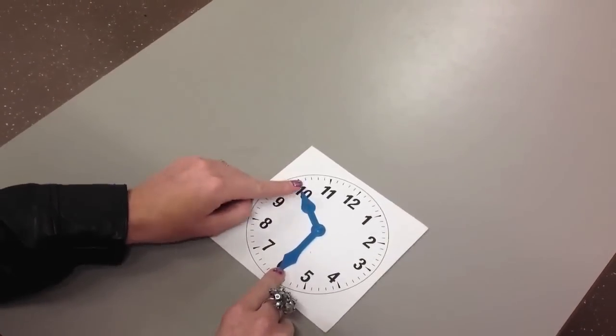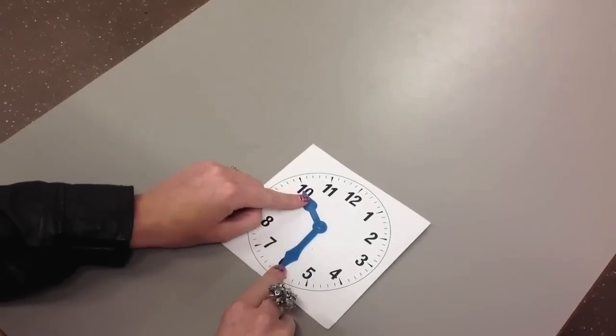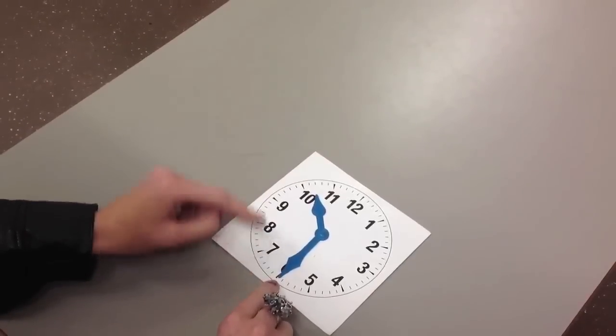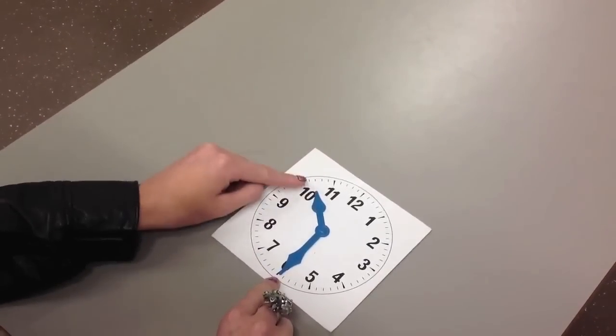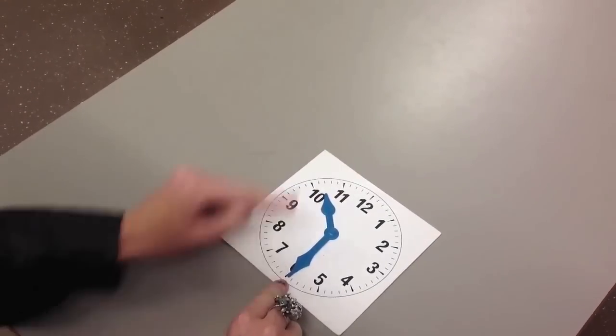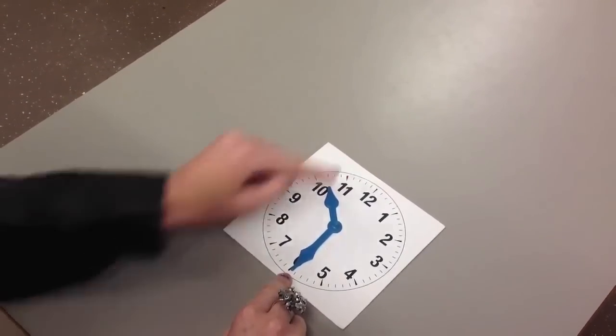But the short hand, it's past 10 and it's nearly 11 o'clock. So we have to make sure that the short hand is in between 10 and 11. And we know it's half past 10 because it's past 10 and not quite 11 yet.